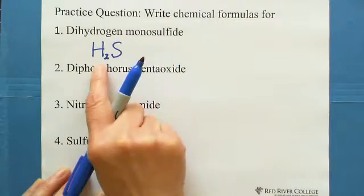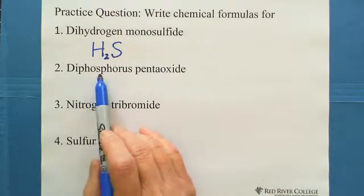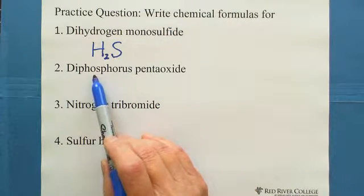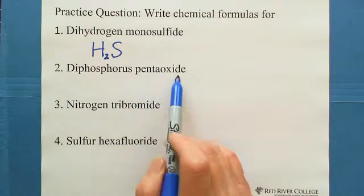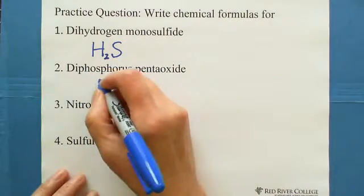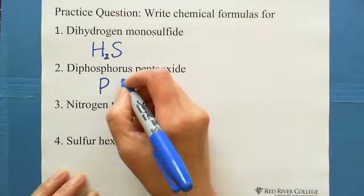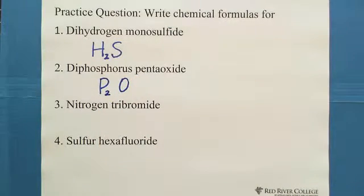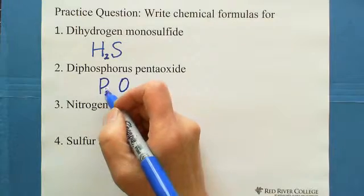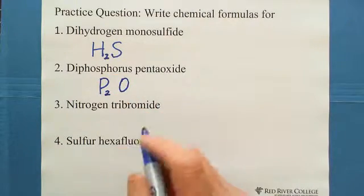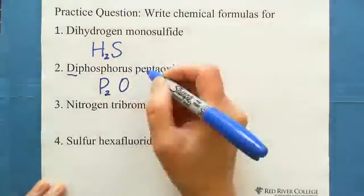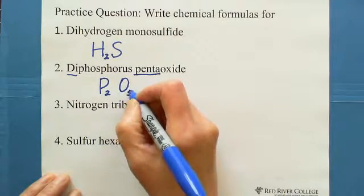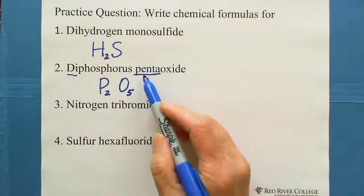So dihydrogen monosulfide is H₂S. The second one: diphosphorus pentoxide. Phosphorus and oxygen are both non-metals. Write phosphorus as P and oxygen as O. Di means 2 phosphorus, so subscript 2. Penta means 5 for oxygen, so write subscript 5 matching the prefix.